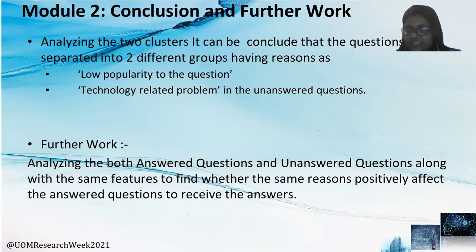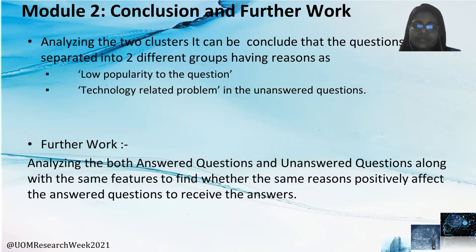As the conclusion of this module, by analyzing the two clusters, it can be concluded that the questions are separated into two different groups having reasons as low popularity of the question and technology-related problems in the unanswered questions. As future work, analyzing both unanswered questions and answered questions along with the same features to find whether the same reasons positively affect answered questions to receive answers can be done.